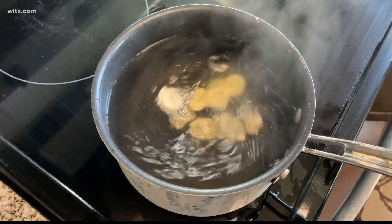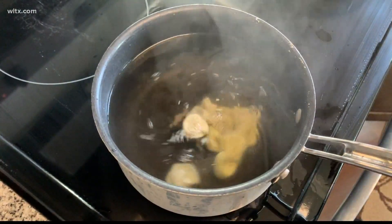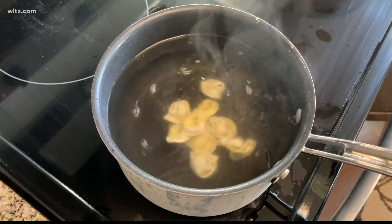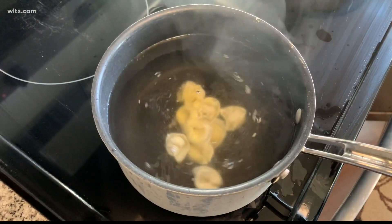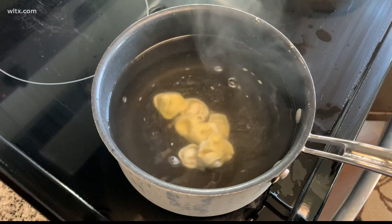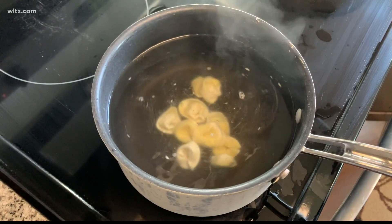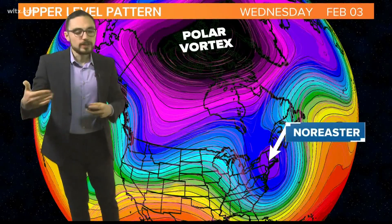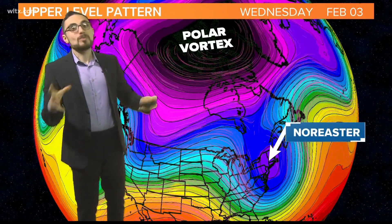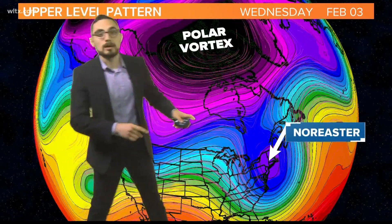The tortellini here — that's your cold air. When the water is spinning fast, the tortellini, or the cold air, stays in place. But the weaker that spin is, the more the tortellini, or the cold air, spreads out. So when you think polar vortex and you think strong is bad, you actually want a strong one if you don't want cold air.